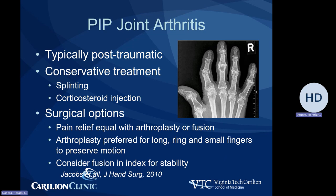Arthroplasty means replacement of the joint with an artificial joint, which could be either a silicone or a pyrocarbon joint replacement. Arthroplasty is preferred for the middle, ring, and small fingers to preserve motion for grip. Fusion can be considered for the index finger PIP joint, although replacement using an implant is also possible. Patients should be counseled regarding use of the hand and avoidance of lateral pinch in the case of arthroplasty for the index finger, to avoid lateral displacement of the joint after replacement.